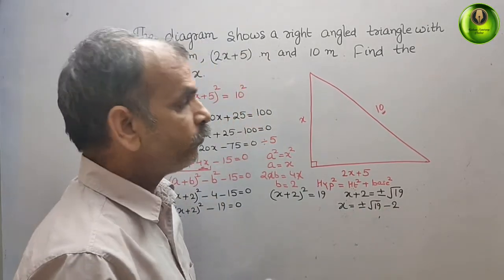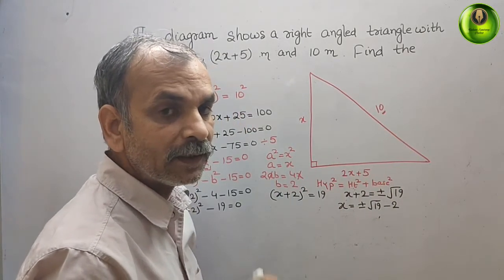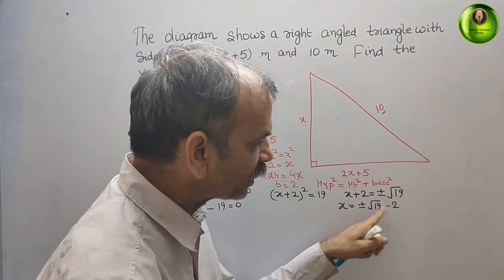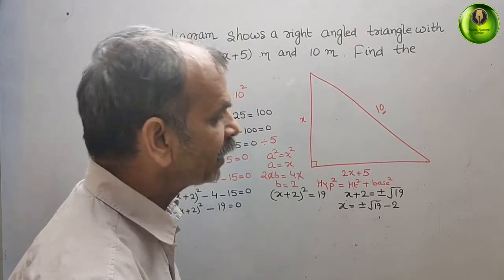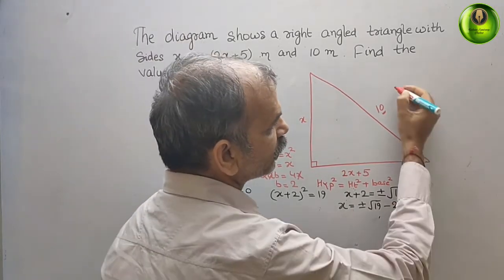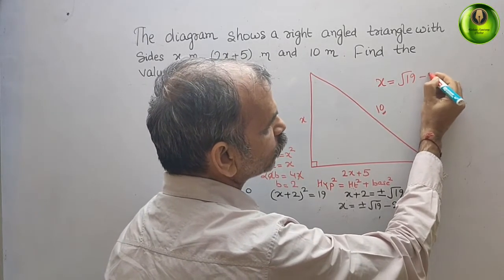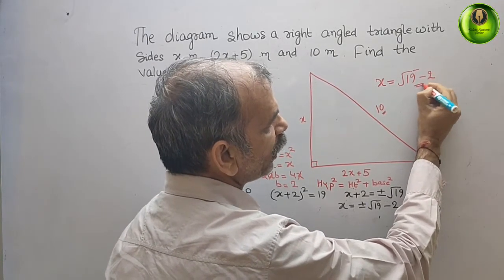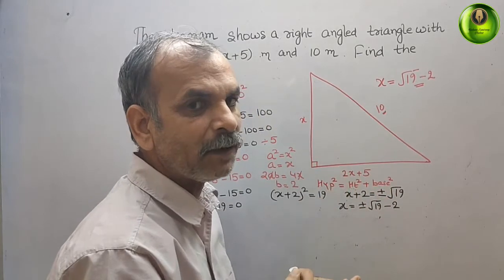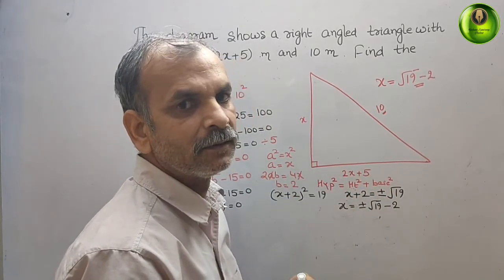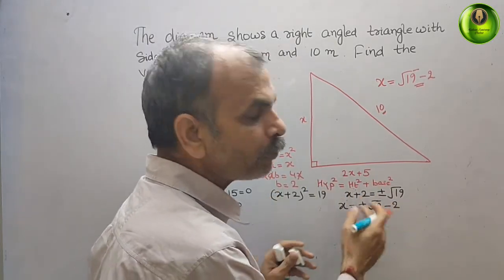Now, we know that it is a triangle. Therefore our answer should not be negative — a measurement cannot be negative. So we neglect the minus sign and take only the positive value. Therefore x equals root 19 minus 2. This is your answer.